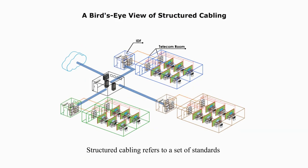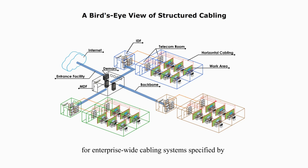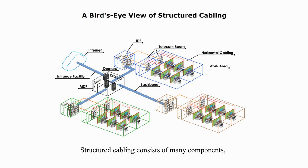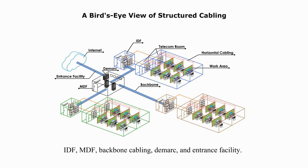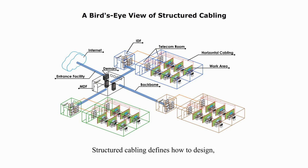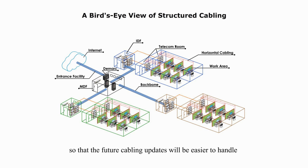Structured Cabling refers to a set of standards for enterprise-wide cabling systems, specified by TIA/EIA 568 Commercial Building Wiring Standard. Structured Cabling consists of many components such as work area, horizontal cabling, telecommunications room, backbone cabling, and entrance facility. We can consider them as building blocks for a network cabling system. Structured Cabling defines how to design, build, and manage a cabling system. It can enable cabling systems with consistency so that future cabling updates will be easier to handle and would support multi-vendor products and environments.